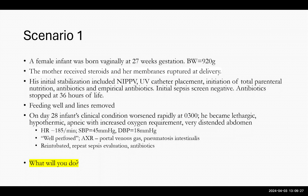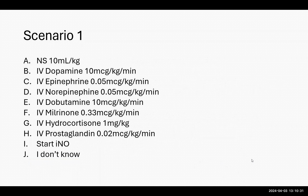Scenario one: a female infant born at 27 weeks, 920 grams. Mom received steroids and membranes ruptured at delivery. Initial stabilization included NIPPV, UV line, TPN, and antibiotics. Initial sepsis screen was negative, antibiotics stopped at 36 hours. The baby was feeding well and lines were removed. On day 28 at 3 a.m., the baby became lethargic, hypothermic, increased oxygen requirement, distended abdomen, heart rate 185, systolic blood pressure 45, diastolic 18. Clinically well-perfused. Abdominal x-ray shows porto-venous gas and pneumatosis intestinalis. The baby was re-intubated, sepsis evaluation started, and antibiotics given. So what would you do next?